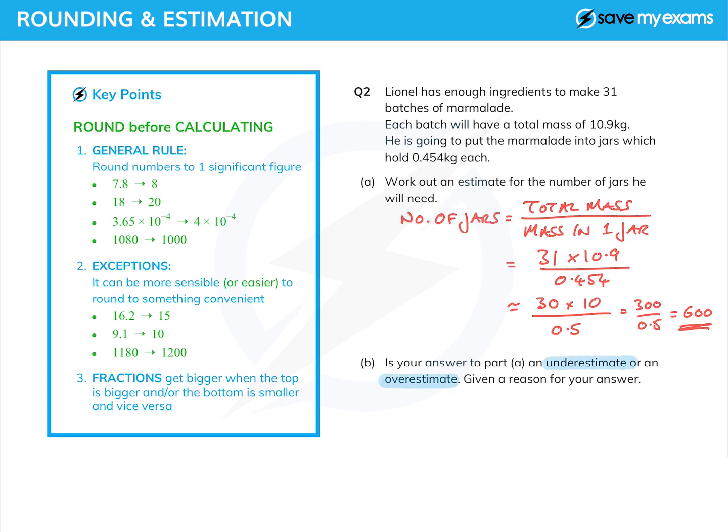And here's the classic rider question: is it an underestimate or an overestimate? Well, let's have a look at what we've done. We have made the top smaller because we've rounded both those numbers down, and we've made the bottom bigger because we've rounded that number up a bit. So we can say top smaller, bottom bigger, and therefore the fraction has got smaller, and so it is an underestimate and we've given our reasons as required.